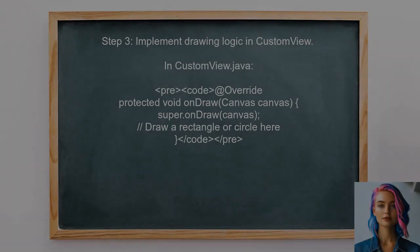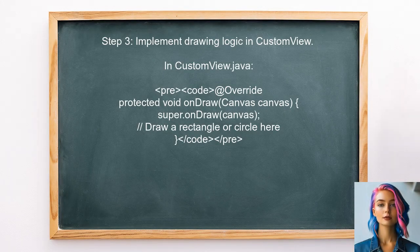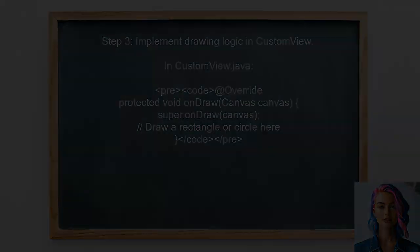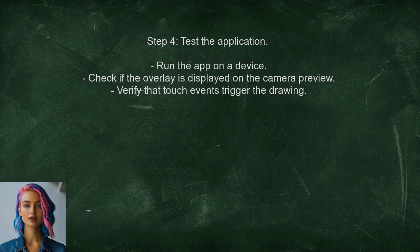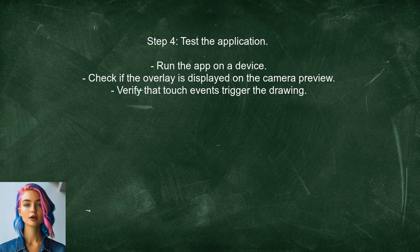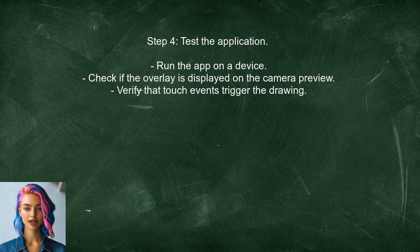Now the user needs to ensure that the CustomView is drawn correctly. This involves overriding the OnDraw method to include the drawing logic for the rectangle or circle. Finally, the user should test the application to see if the overlay appears correctly on the camera preview, by running the app on a device.